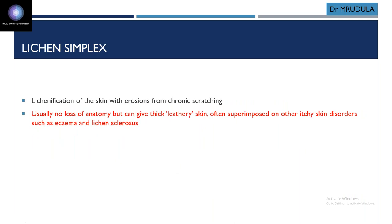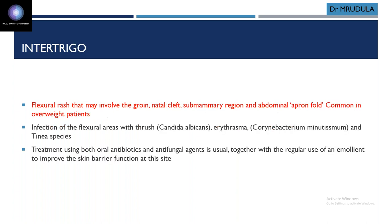Lichen simplex is just lichenification of the skin due to chronic scratching — leathery skin thickening with no loss of anatomy. It is usually present along with lichen sclerosis or eczema. Intertrigo is usually observed in overweight patients — a flexural rash involving groin, natal cleft, submammary region, and abdominal apron fold. It is usually infectious in etiology — candida, erythrasma, corynebacterium. Treatment is antifungals plus antibiotics plus emollients.